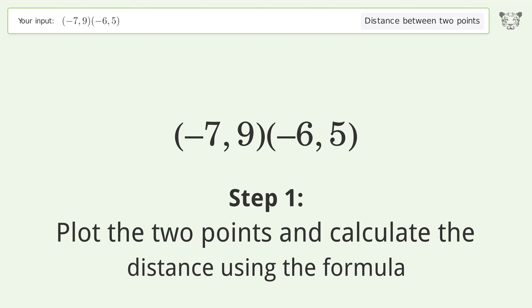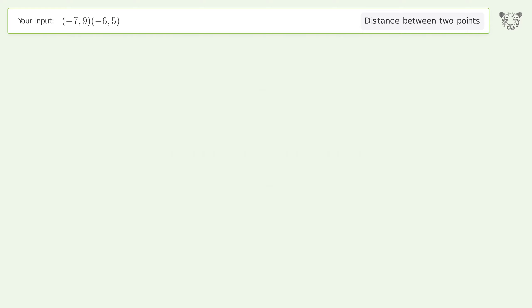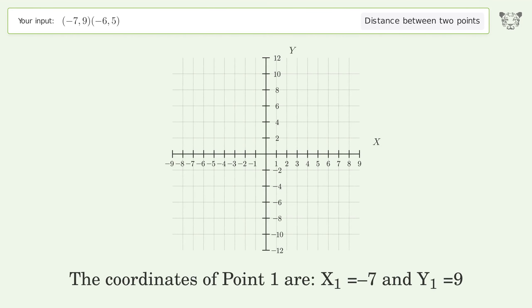The coordinates of Point 1 are x1 equals negative seven and y1 equals nine. The coordinates of Point 2 are x2 equals negative six and y2 equals five.